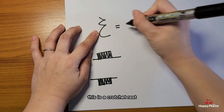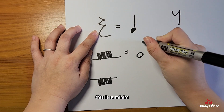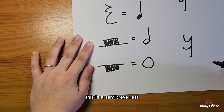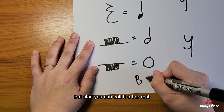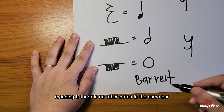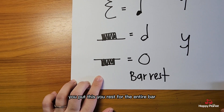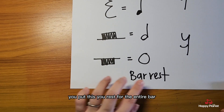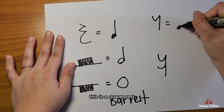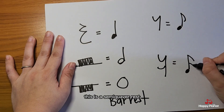This is a crotchet rest. This is a minim rest. This is a semibreve rest, but you can also call it a bar rest — meaning if there are no other notes in the same bar, you put this and rest for the entire bar. This is a quaver rest. This is a semiquaver rest.